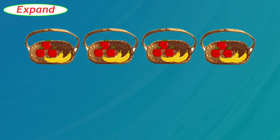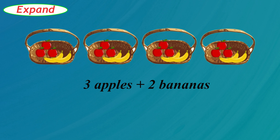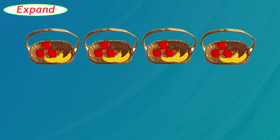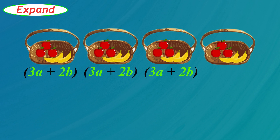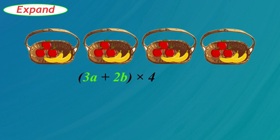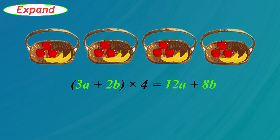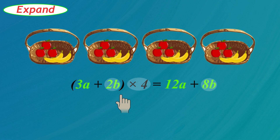What happens when there are four baskets and each basket has three apples and two bananas? Altogether that's 12 apples and eight bananas. Let's write that in algebra. Three apples and two bananas are in one basket — that's 3A plus 2B in parentheses. There are four baskets so we multiply that by four. We multiply each thing inside the parentheses by the four outside, so 3A multiplied by 4 is 12A and 2B multiplied by 4 is 8B.